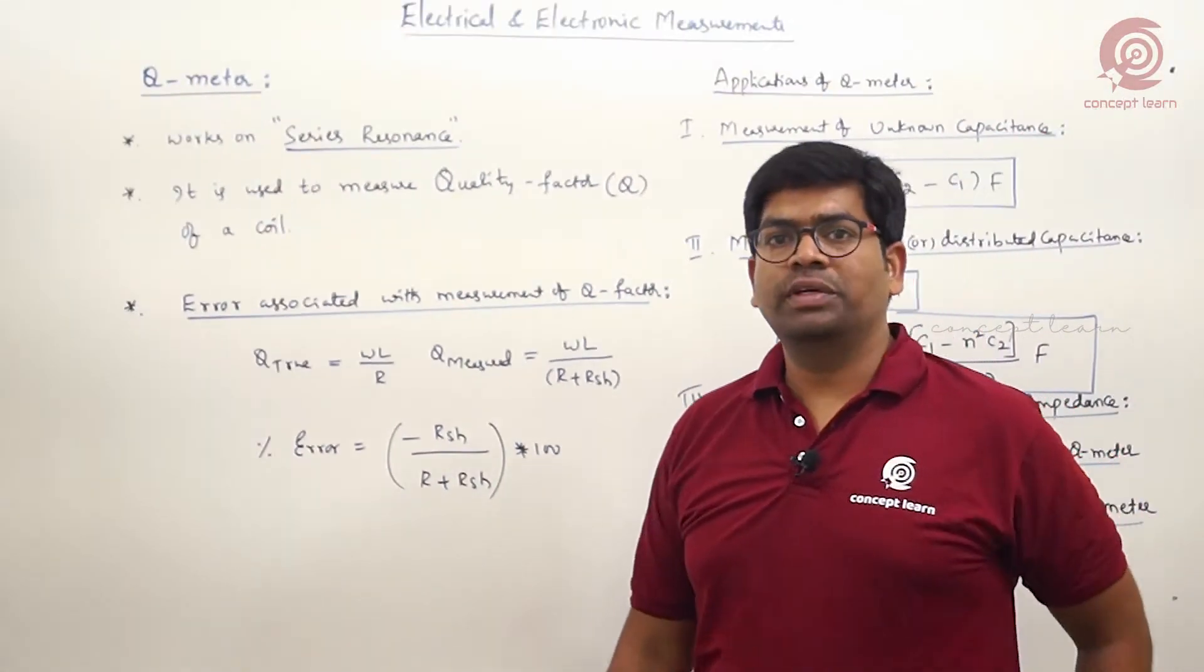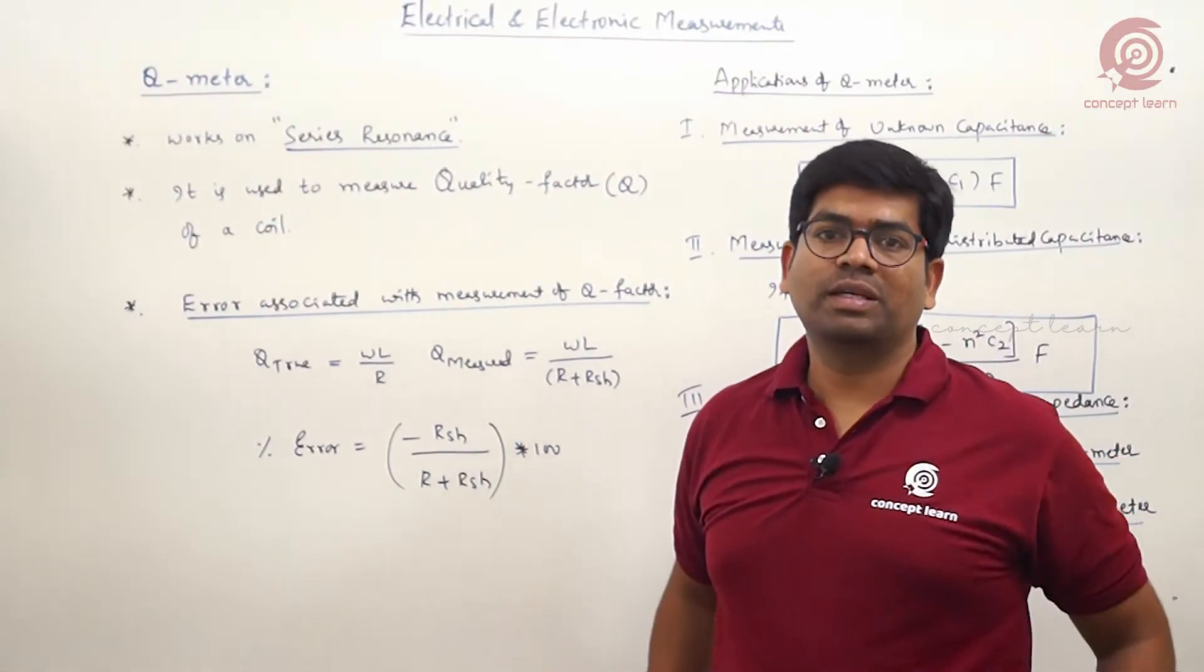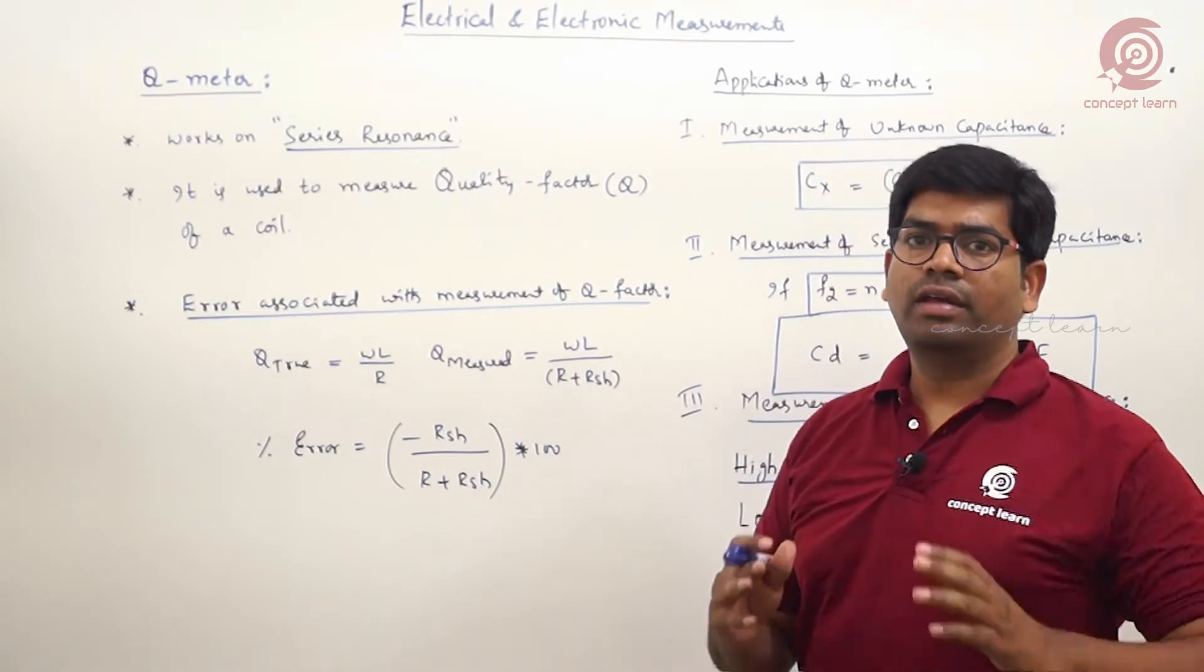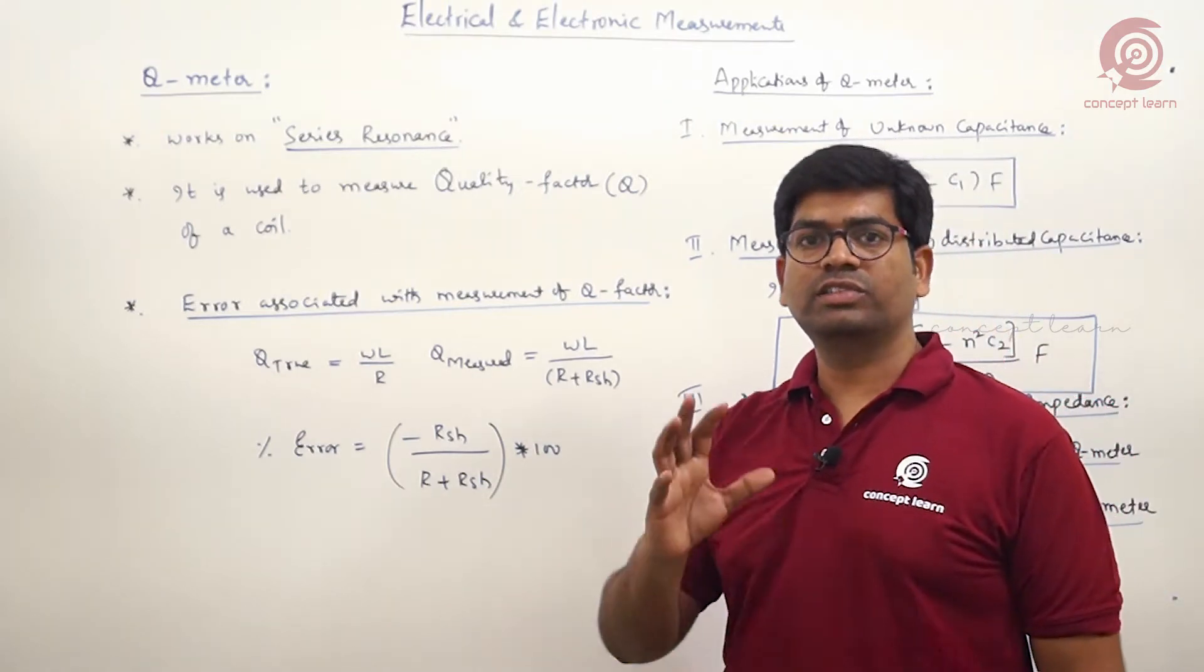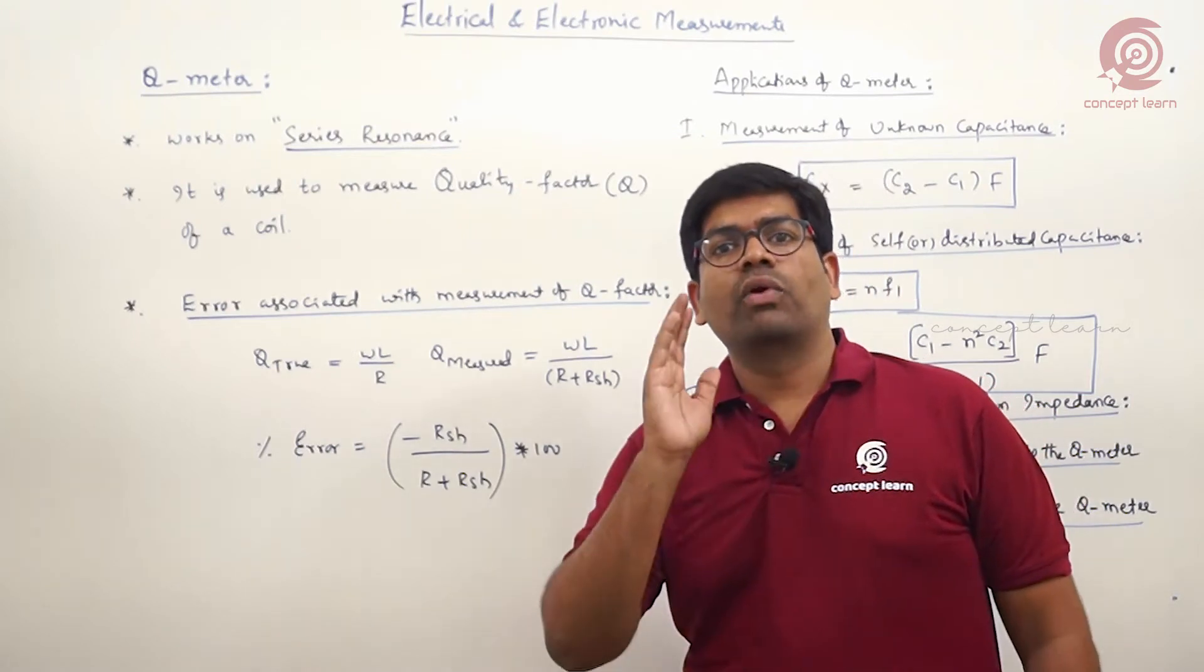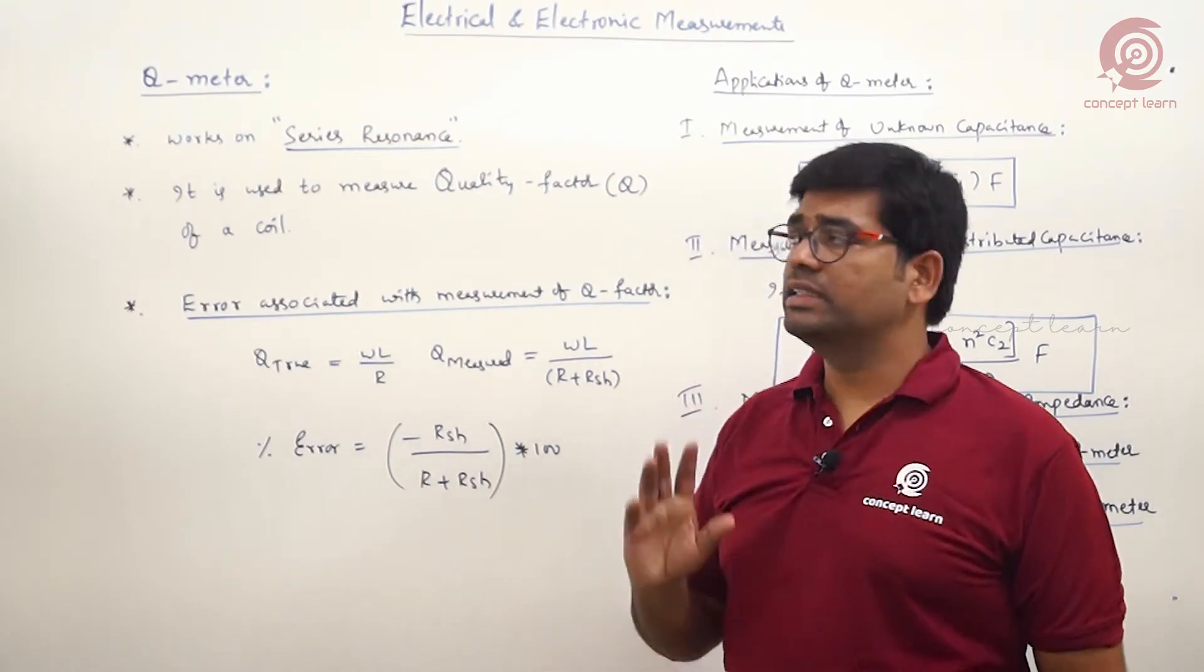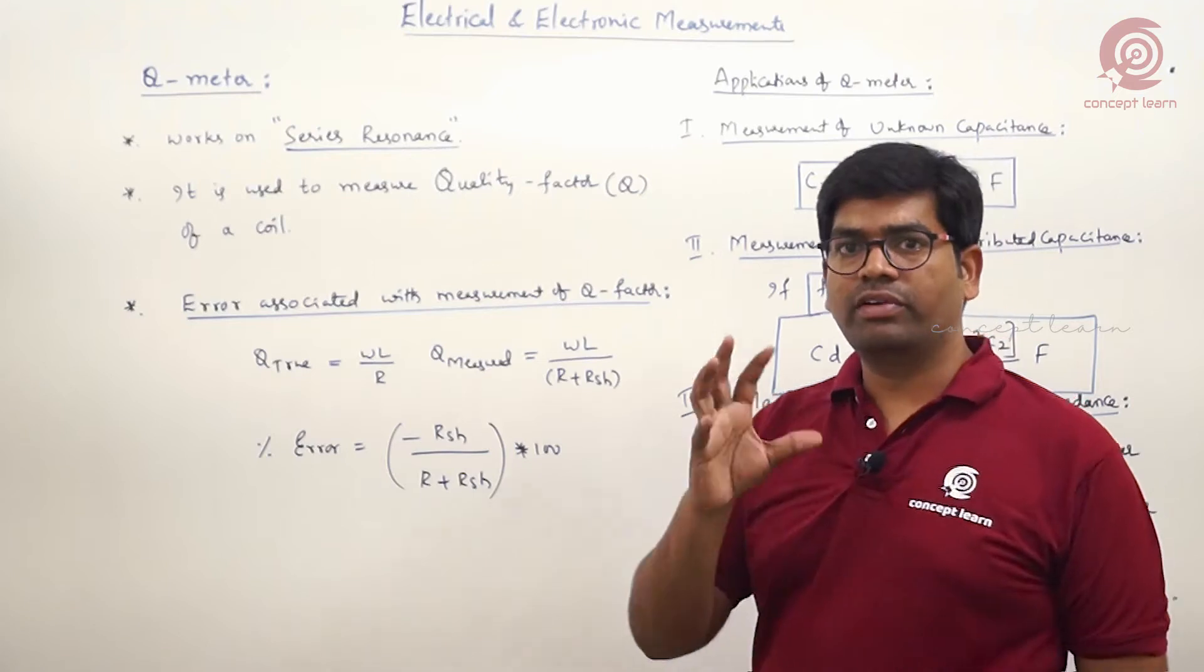Now we'll see Q meter related summary points. Q meter means it is a quality factor meter, used to measure the quality factor of a coil. It mainly works on the principle of series resonance.